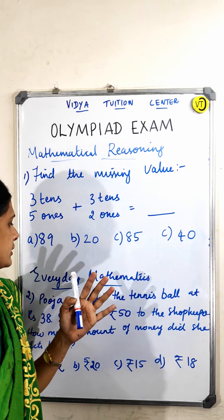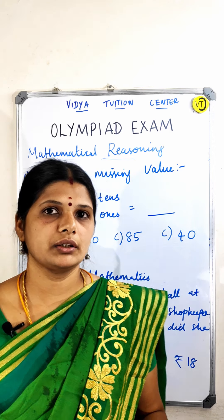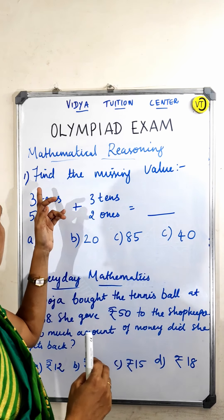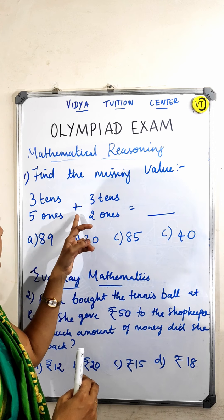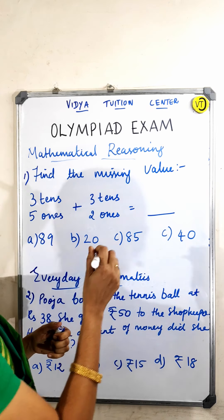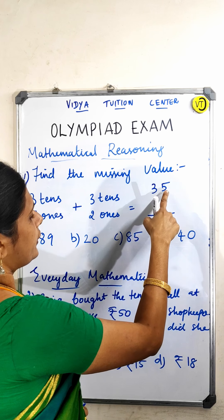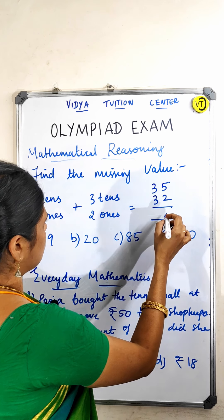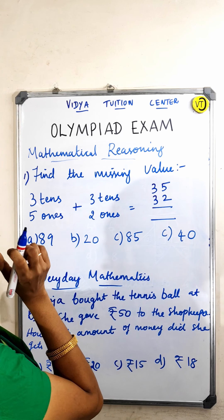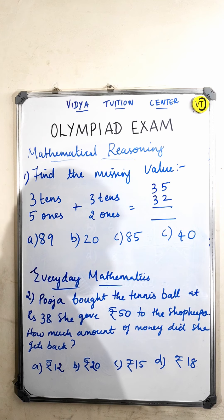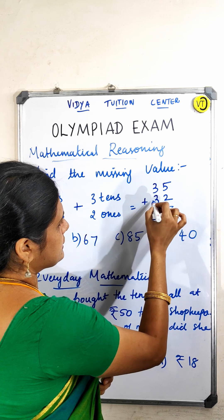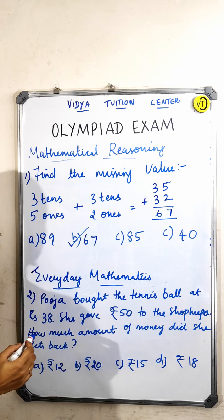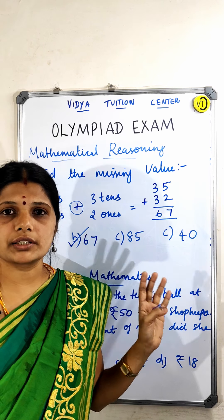Now for Mathematical Reasoning — this involves addition and subtraction. For example: 'Find the missing value: three tens and five ones plus three tens and two ones.' Three tens and five ones is 35, and three tens and two ones is 32. So 35 plus 32: five plus two is seven, three plus three is six, giving the answer 67.